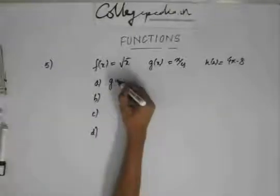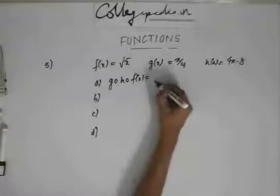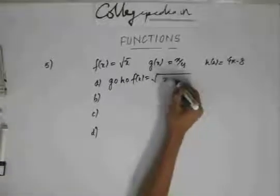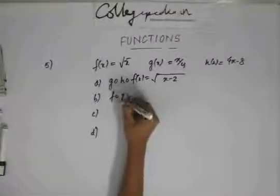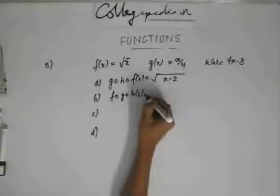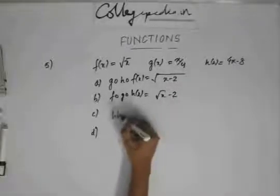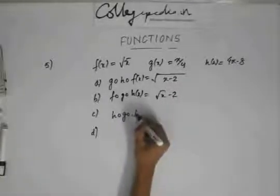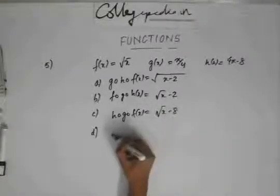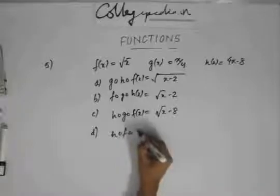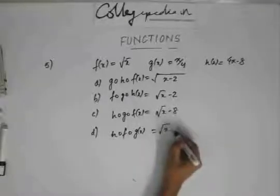The first option is g(h(f(x))) equals root of x minus 2. The second option is f(g(h(x))) equals root of x minus 2. The third option is h(g(f(x))) equals root of x minus 8. And the fourth option is h(f(g(x))) equals root of x minus 4.